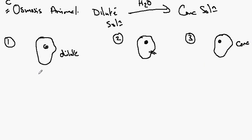These have names. Where the external solution is dilute we call this hypotonic. Where the concentration of the cytoplasm and the external solution are equal we call this isotonic.